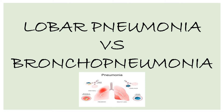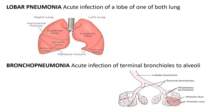Difference between Lobar Pneumonia and Bronchopneumonia. Lobar pneumonia is acute infection of a lobe of one or both lungs. In the right lung there are three lobes: superior, middle, and inferior lobe. In the left side there are two lobes: superior lobe and inferior lobe. Whenever there is acute infection in any lobe — superior, middle, or inferior — that is known as Lobar Pneumonia.